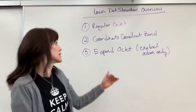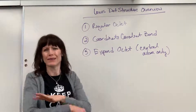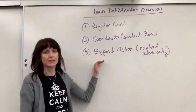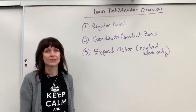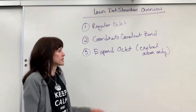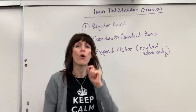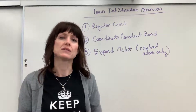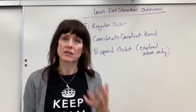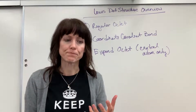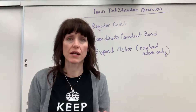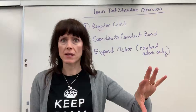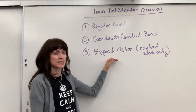Now, let's say that you can't do a regular octet and there's nothing to do a coordinate covalent bond. That is when finally you say uncle — okay, I'm going to expand the octet. Now, expanding the octet — remember — it's only the central atom that expands. The substituent atoms, the atoms that surround and are attached to that central atom, they will always have an octet. So you give them what they need and you only expand that central atom.